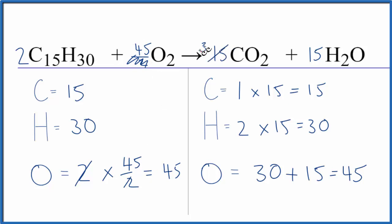2 times 15, that's 30. And 2 times the 15 here, that's 30. So these would be the whole number coefficients for C15H30 plus O2. Let me clean that up just a little bit. And these are our coefficients.